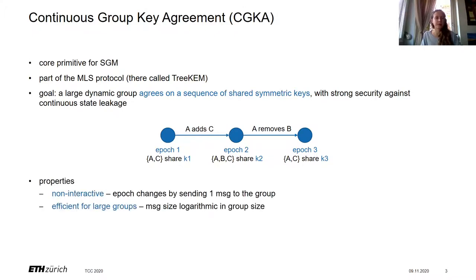There are two important properties we want from CGKA. First, it's non-interactive: an epoch can be changed by sending just one message to the group. I can initiate a new epoch by sending one message and then go offline, and whoever afterwards goes online and downloads my message can immediately transition to the new epoch and encrypt messages using the new shared key. Second, it should be efficient for large groups, so the message size should be logarithmic.